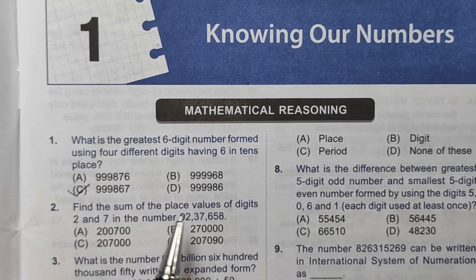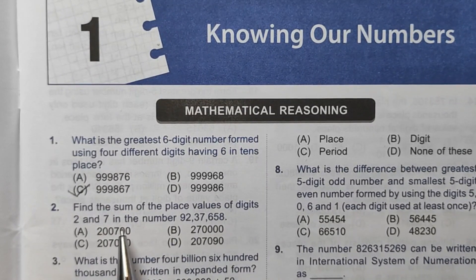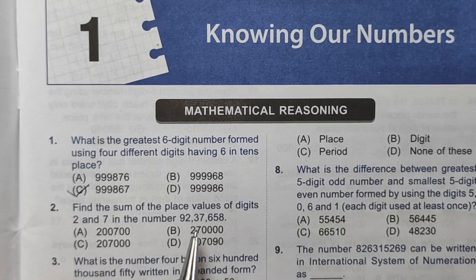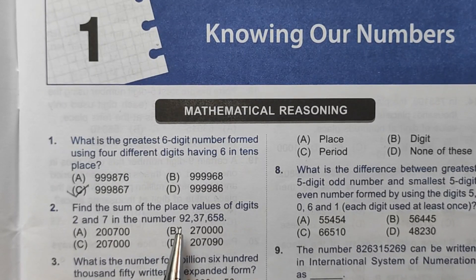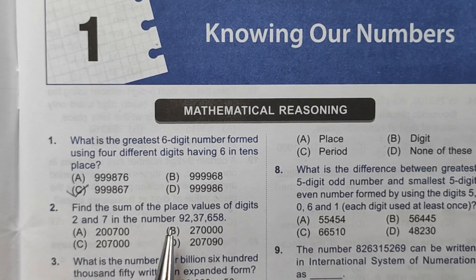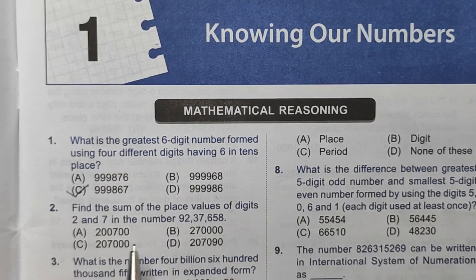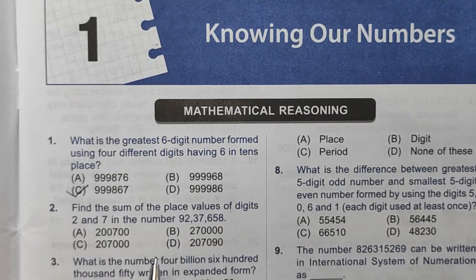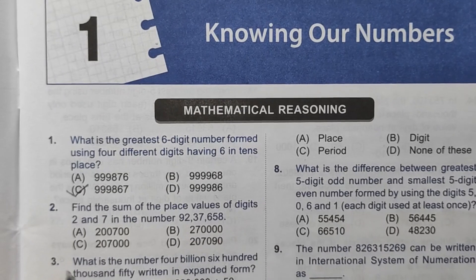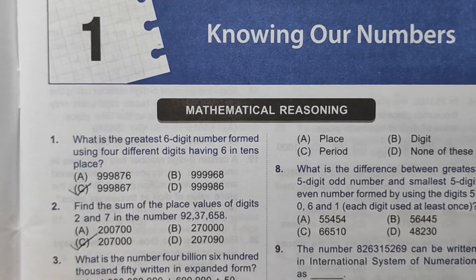Second question: Find the sum of the place values of digits 2 and 7 in the number 92,37,658. The place value of 2 will be 2 lakh and of 7 it will be 7000. So 2 lakh plus 7000 will be 2 lakh 7000. The correct answer will be option number C.